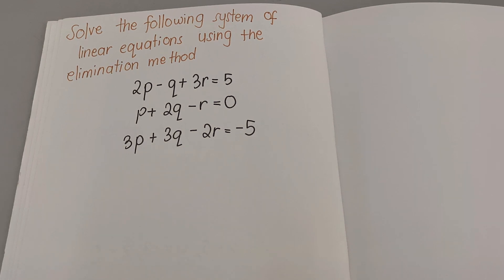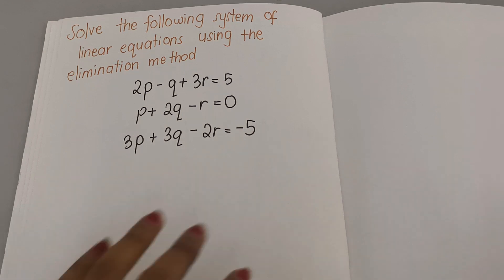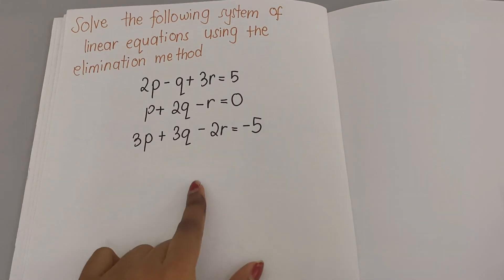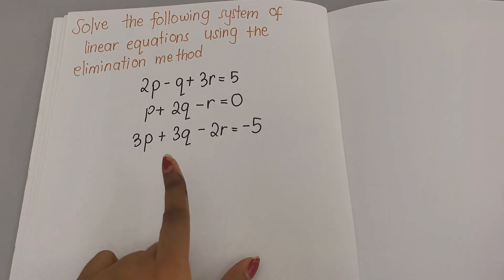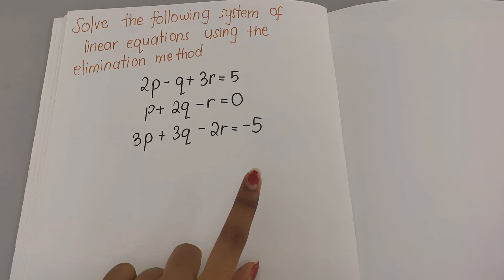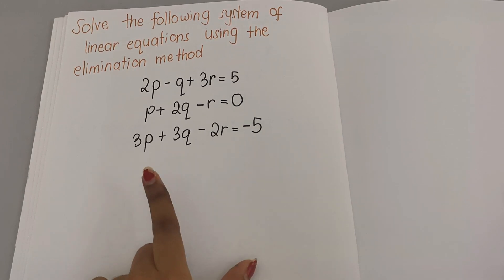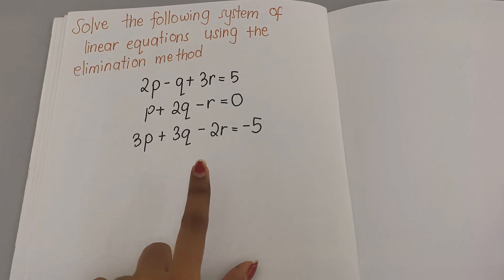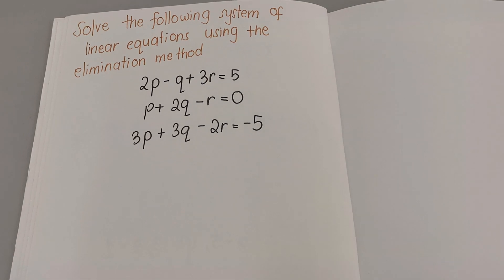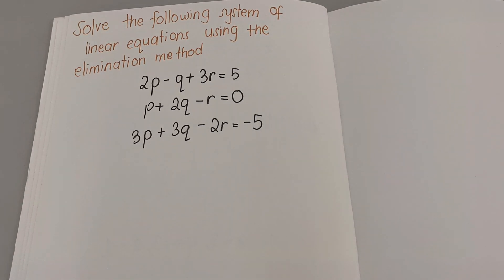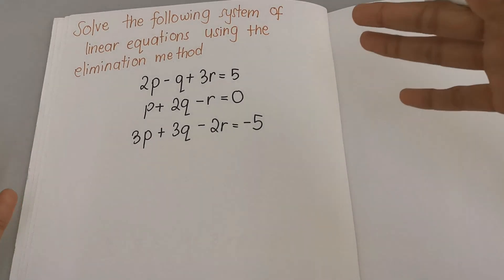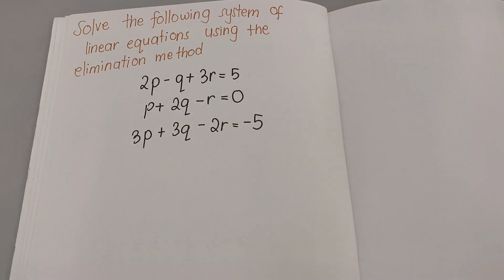The question is: 2p minus q plus 3r equals 5; p plus 2q minus r equals 0; 3p plus 3q minus 2r equals negative 5. For the elimination method, you need to choose which variable you want to eliminate first.